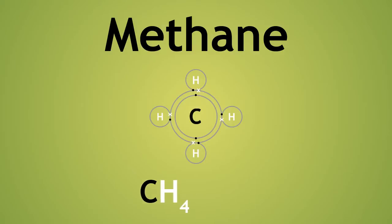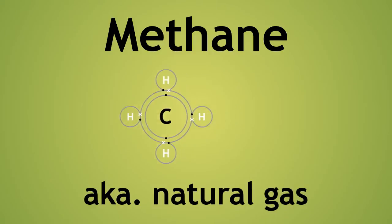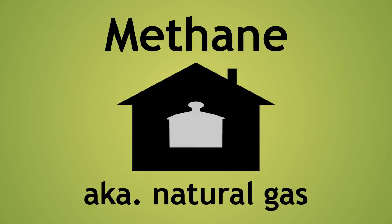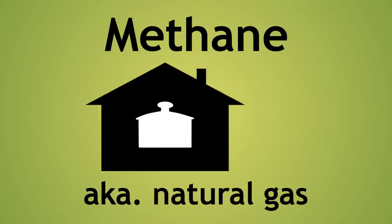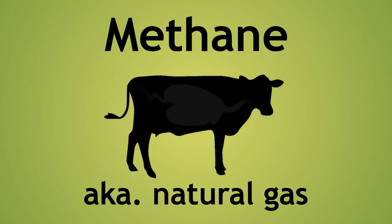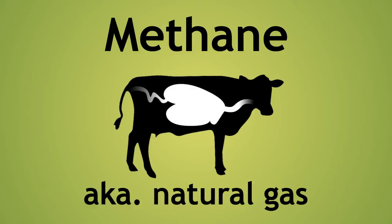Methane is known as natural gas and is often used as a fuel in homes for heating and cooking. It is also the gas released by cows by belching and flatulence, as it is produced by the fermentation of food by bacteria in their stomachs.